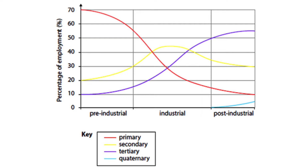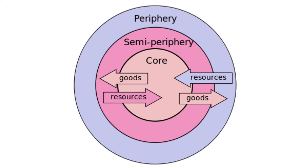But as much as that is a similarity, there are some key differences. There's a diagram at the bottom of page 37, which is explained on page 38, that I want to talk you through: Frank's theory of dependency. Before face-to-face lessons stopped, I introduced you to the core periphery model - one of the simplest models ever. You've got the core in the centre, like the core of an apple or the earth, and on the edges you have the periphery. Frank takes the core periphery model and adds to it.